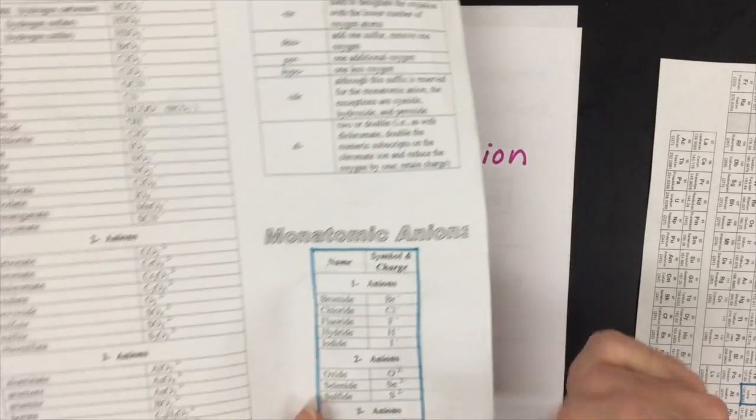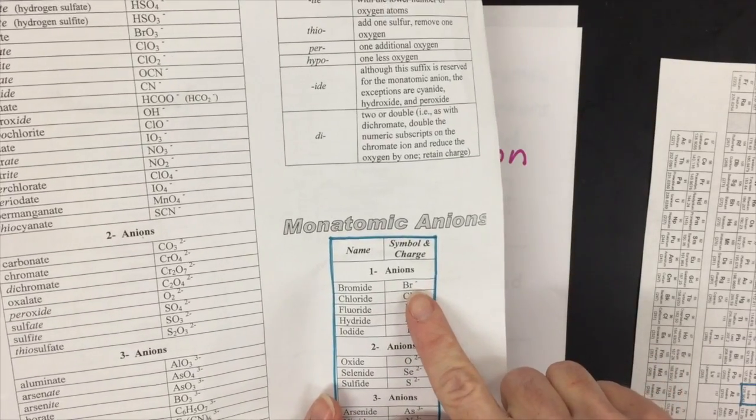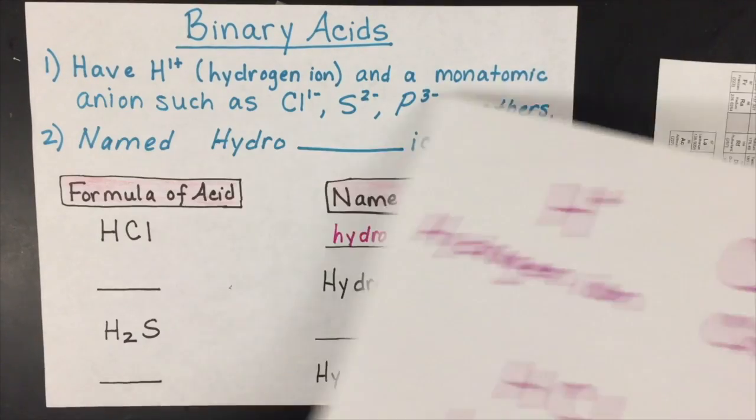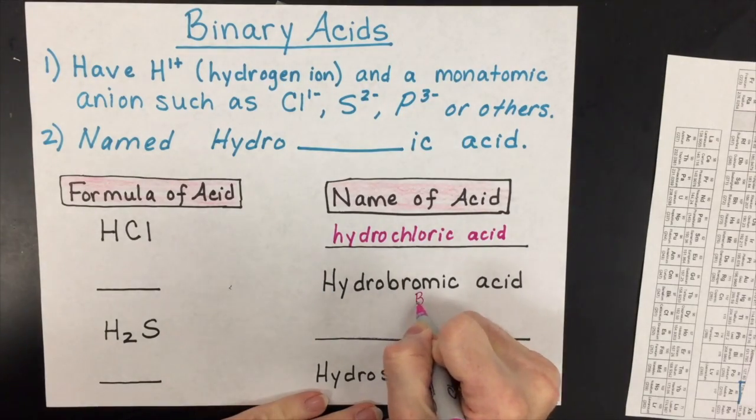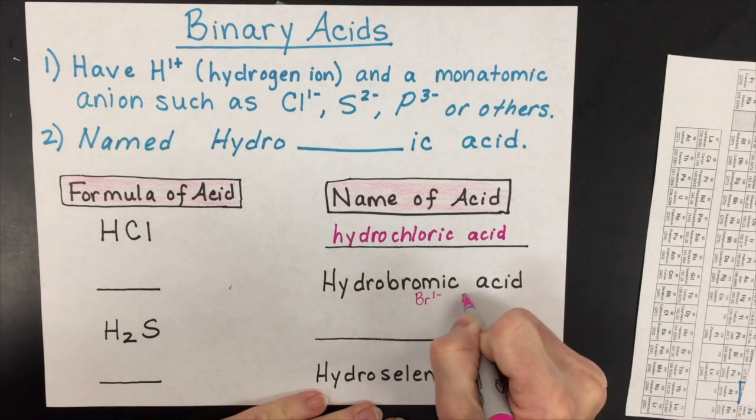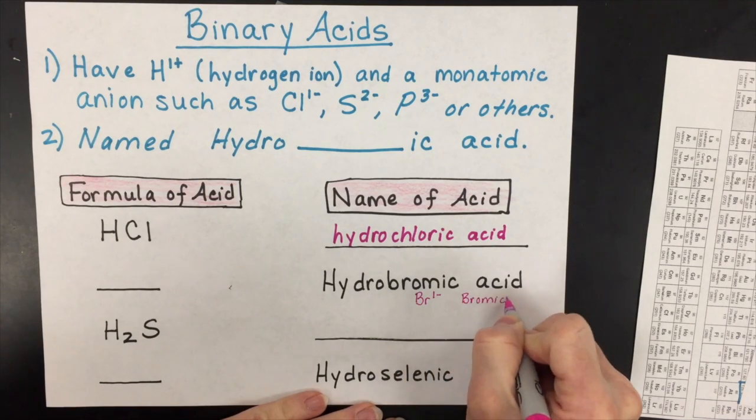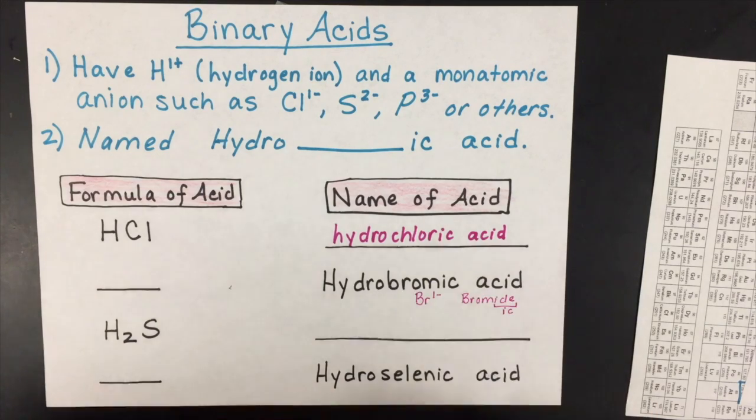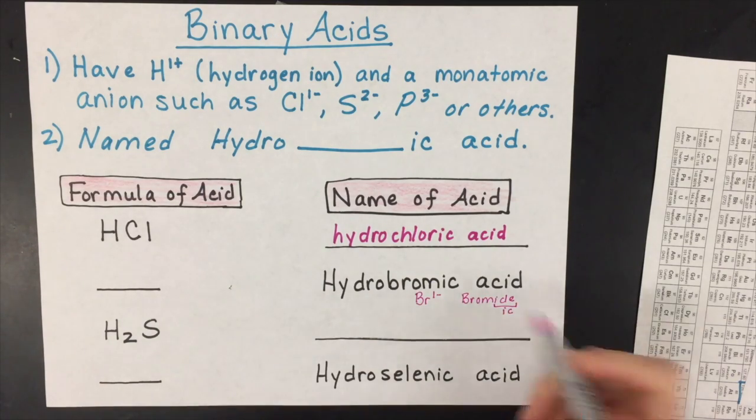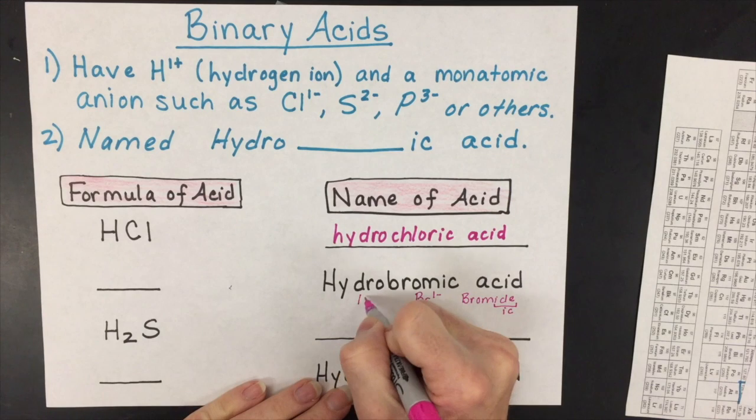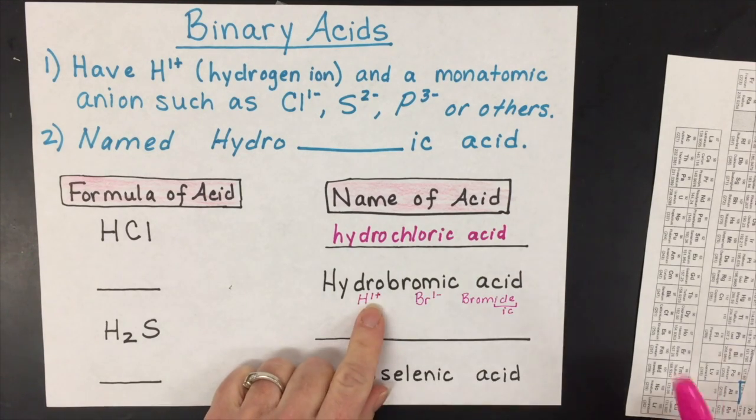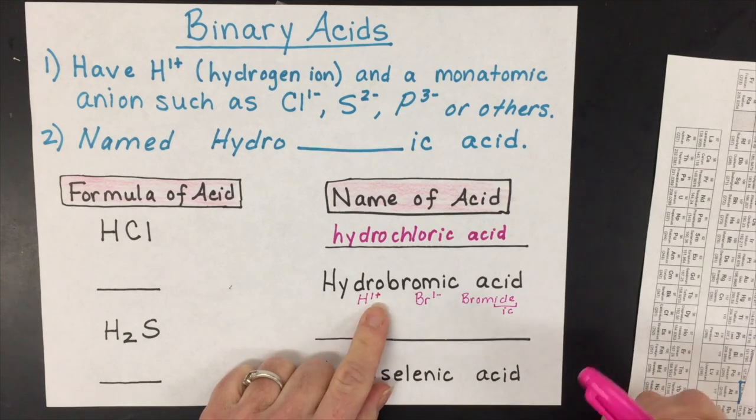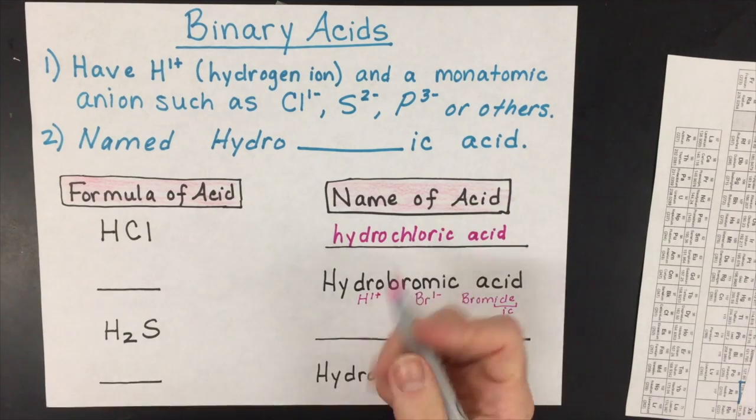If you had hydrobromic acid, instead of having the chloride ion, you'll have the bromide ion, which is the same charge—one minus—but with the symbol Br. With hydrobromic acid, we have the bromide ion, and we're going to change the -ide to -ic. Then we have to consider that we're adding a hydrogen ion, which is one plus, so the net charge needs to be zero. In this case, one plus and one minus equals zero, so you would have just HBr.